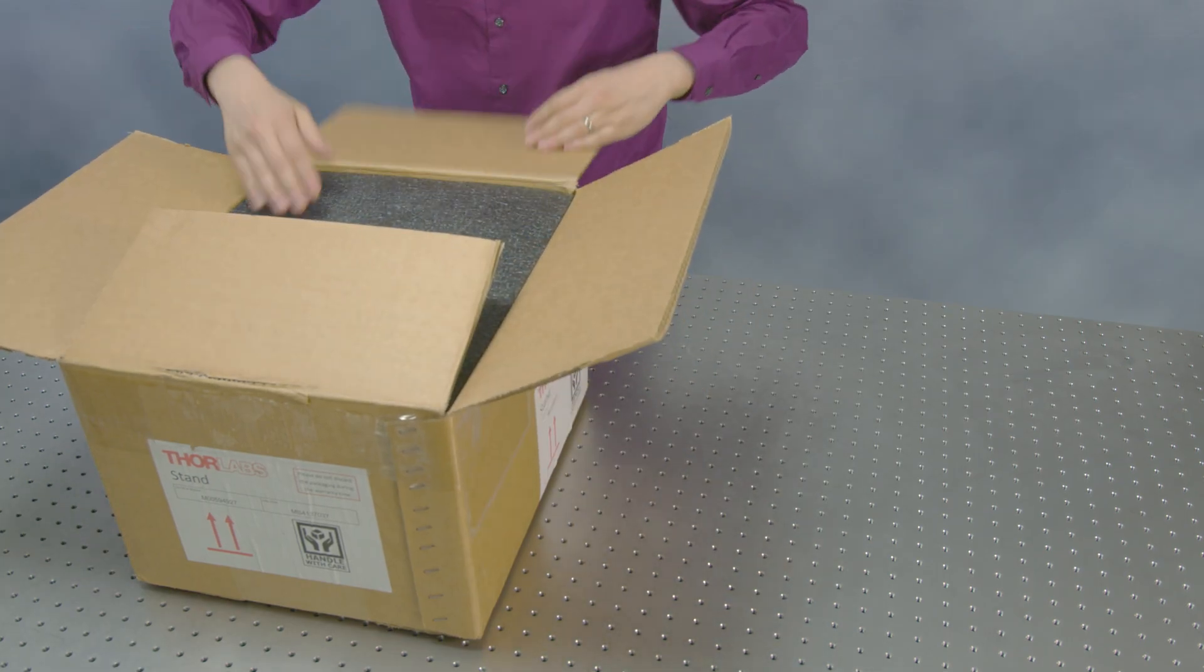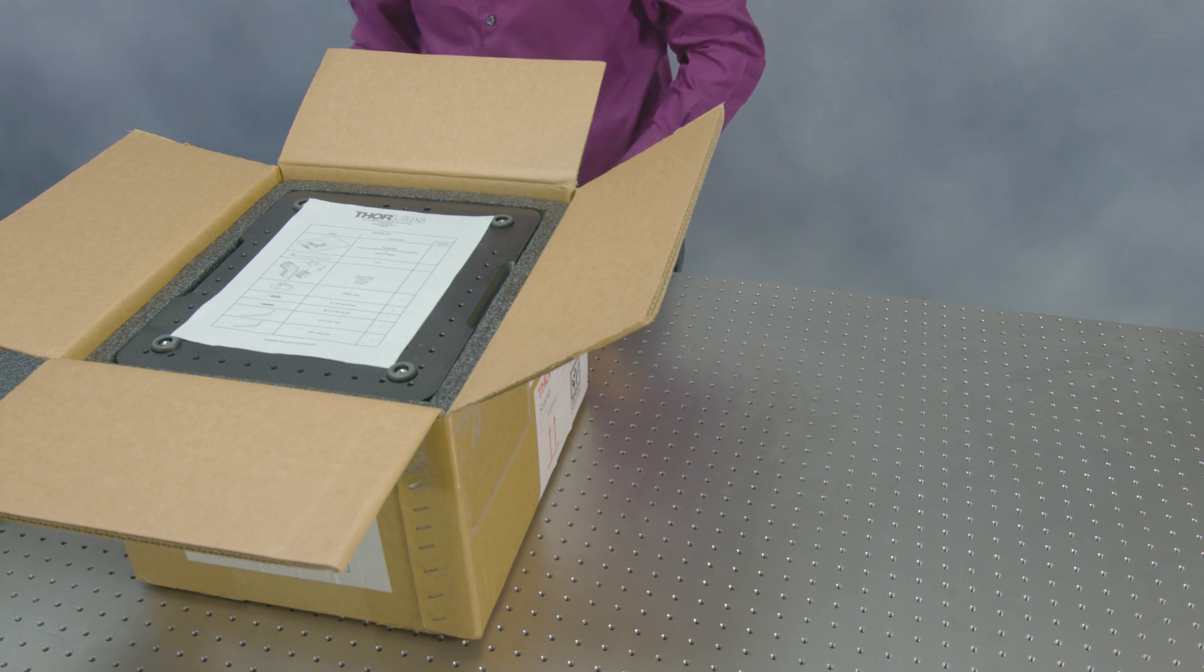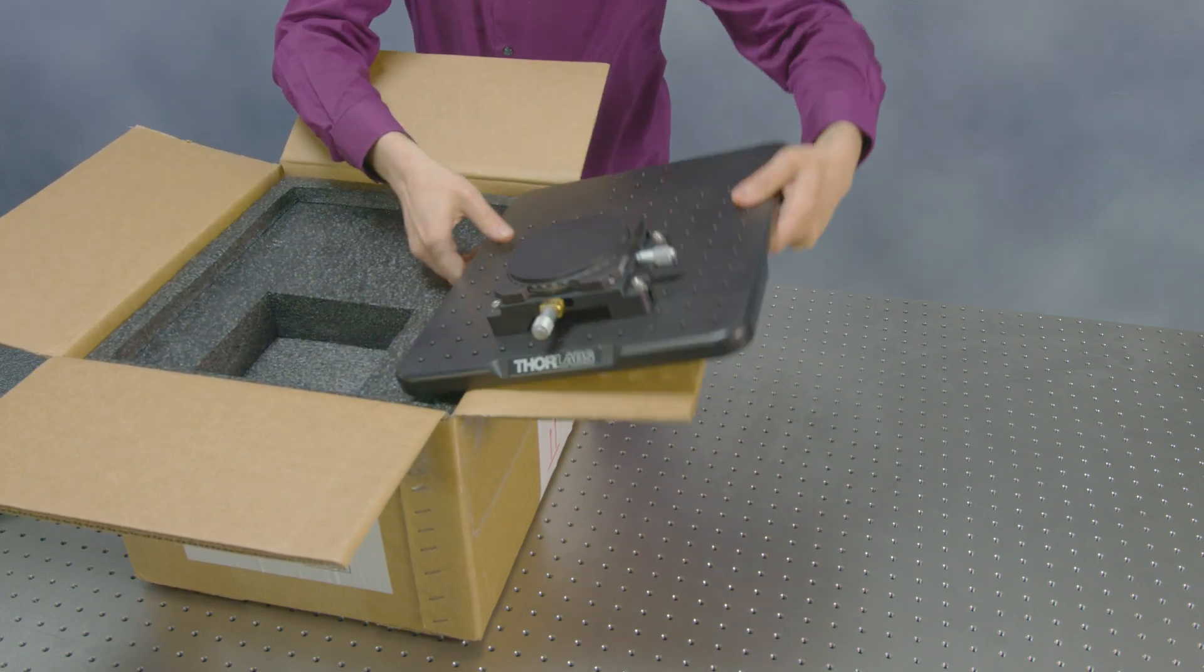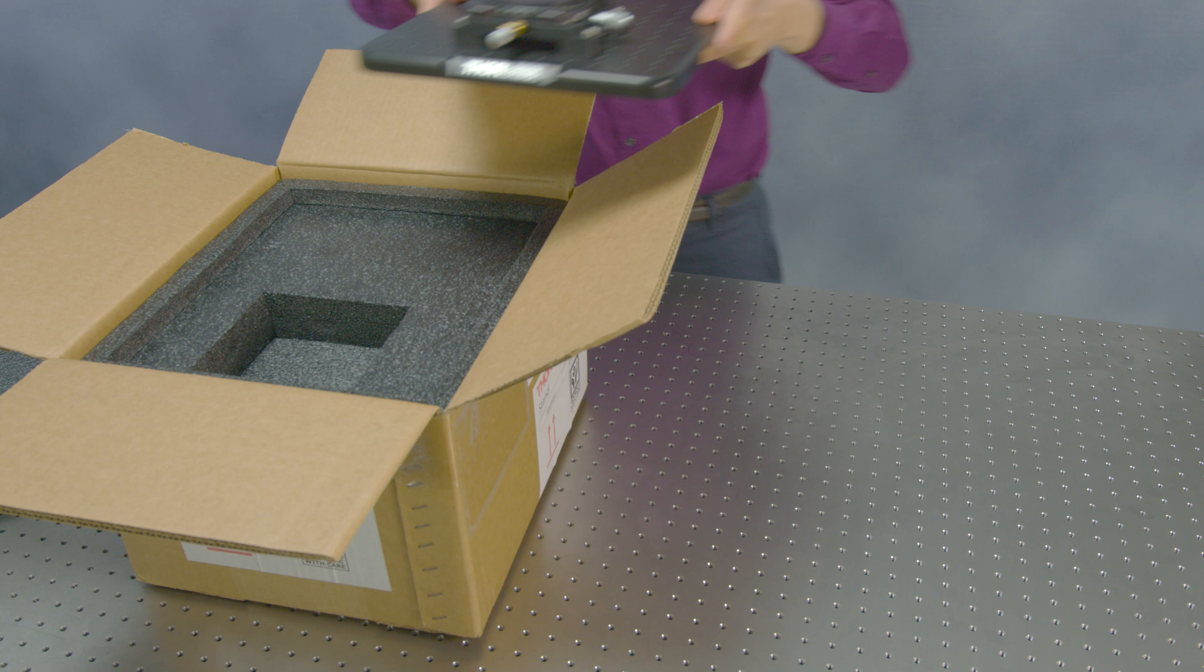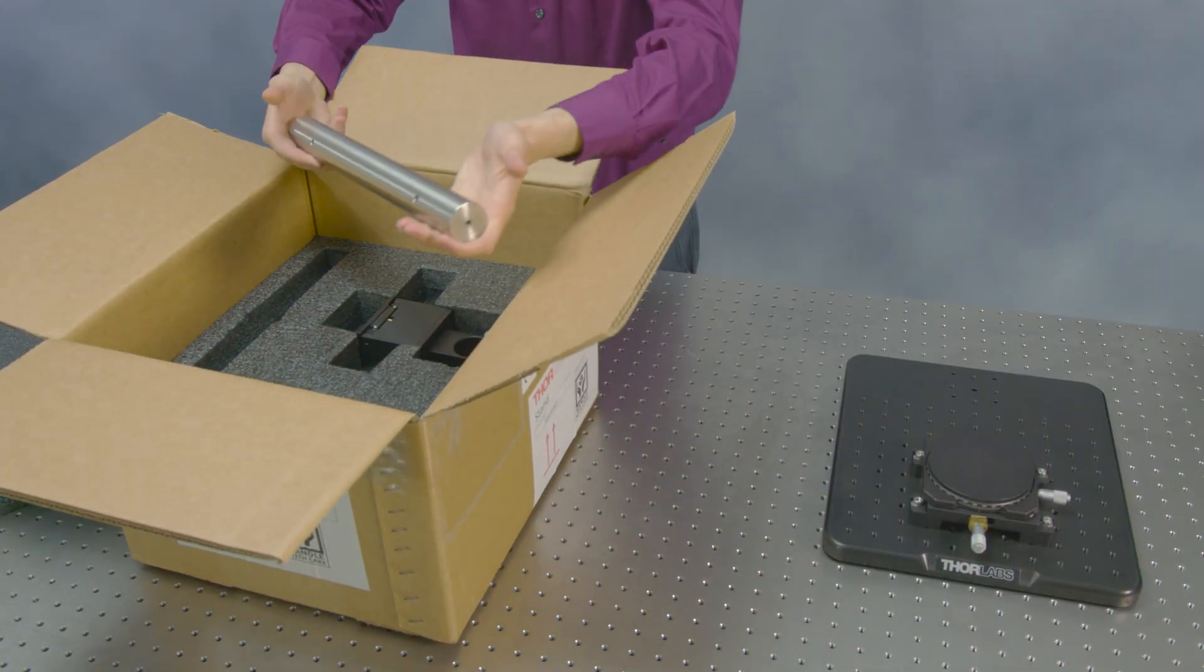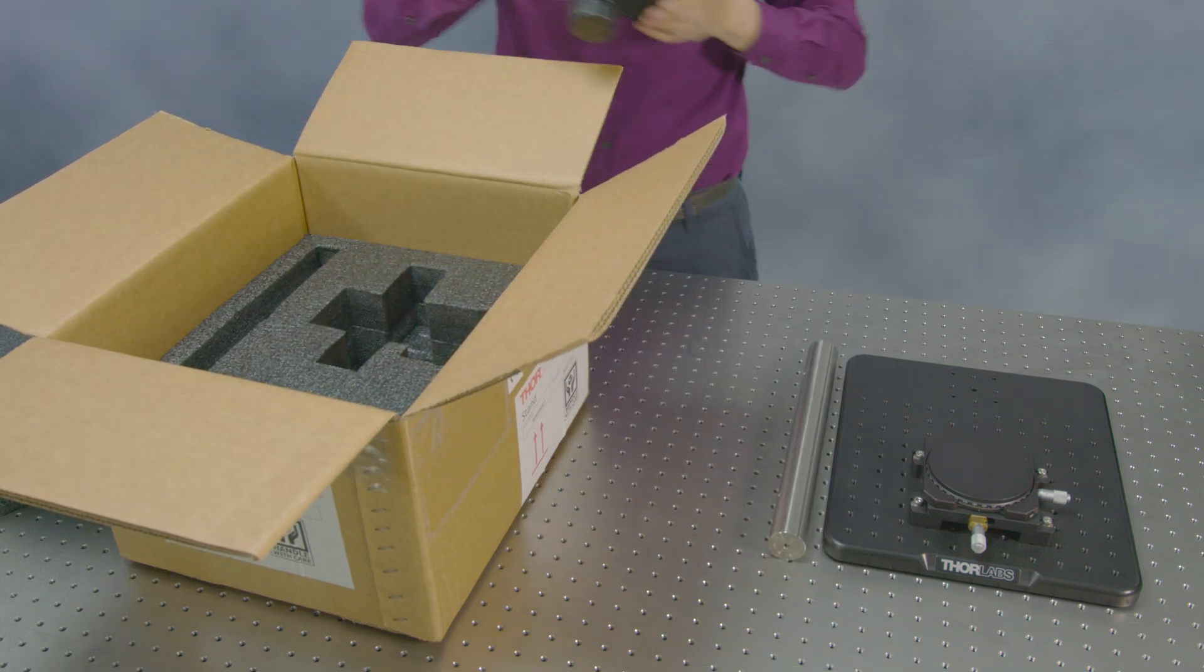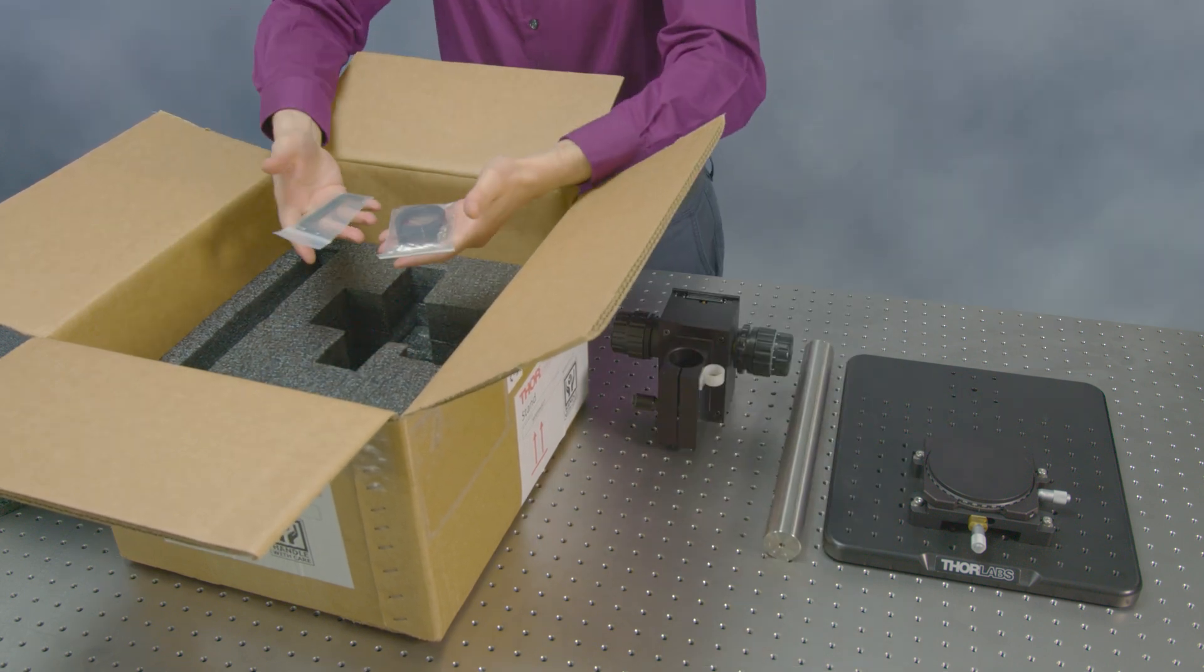Safely open the box labeled stand. Inside you will find detailed assembly instructions. Remove the breadboard with attached translation stage, optical post, focus block, safety ring, and hardware.